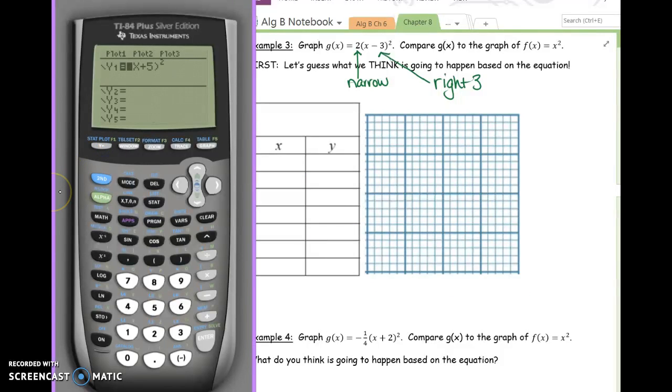In example 3, the 2 in front of the parentheses is going to make the graph more narrow. The minus 3 is going to move it 3 to the right. Put this into your calculator using those parentheses.